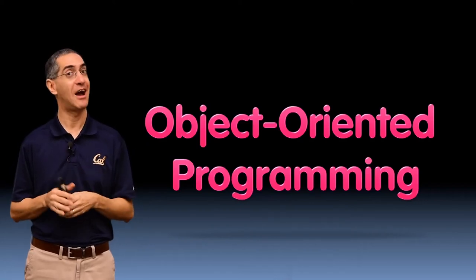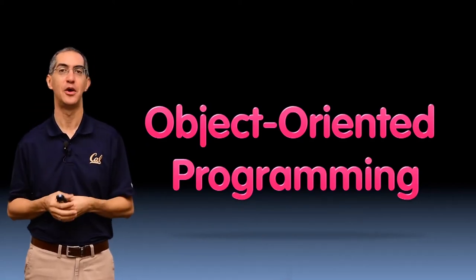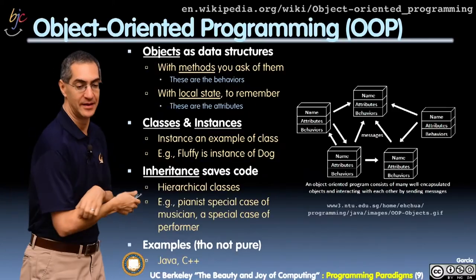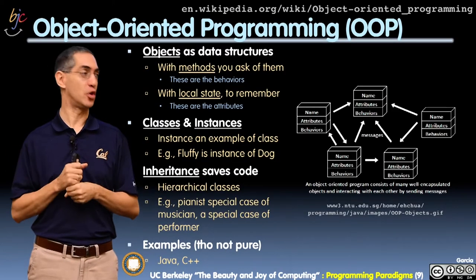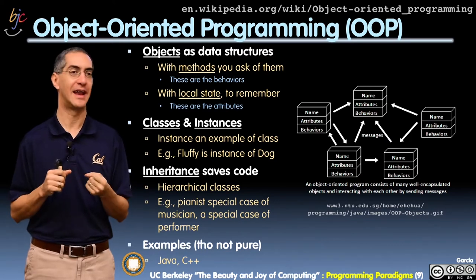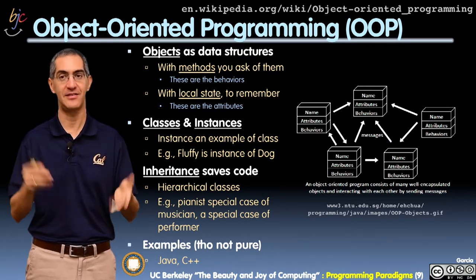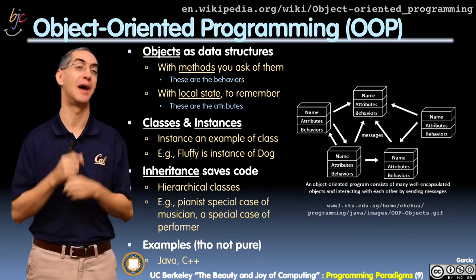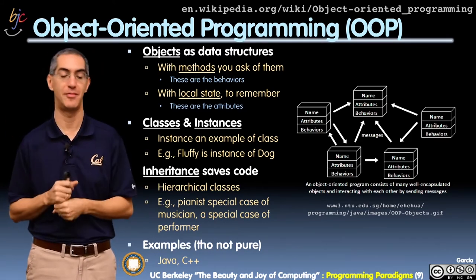Alright folks, welcome back. Now I'm going to teach you the third style, which is called object-oriented programming. This is also known as OOP, and you may have heard this before. If you've heard of the language Java or C++, these are examples of object-oriented dominated programming.